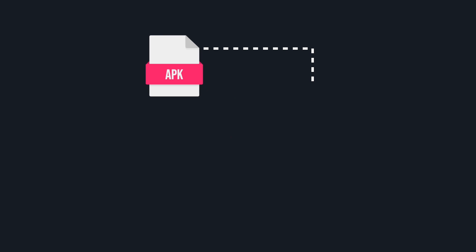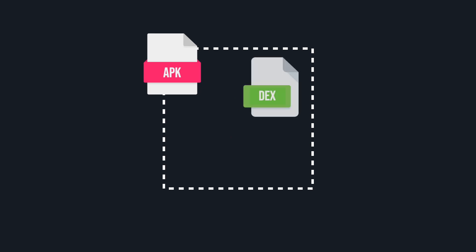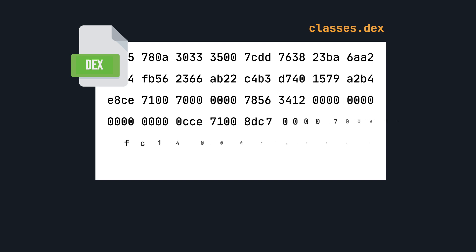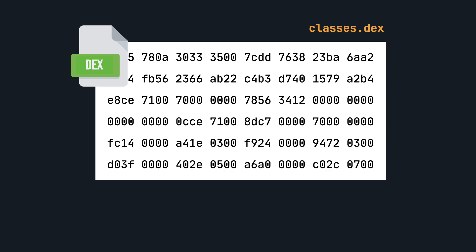But first, what exactly is Android Runtime? When we build our app and generate an APK, part of that APK are DEX files. Those files contain the source code of our app, including all libraries that we used.